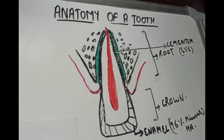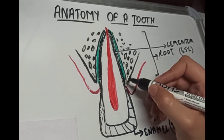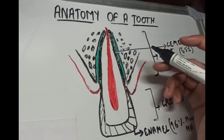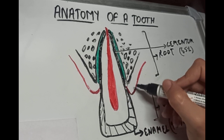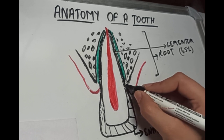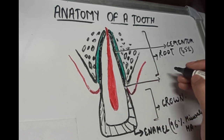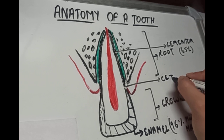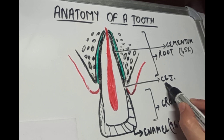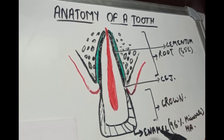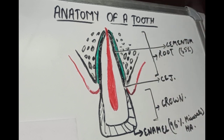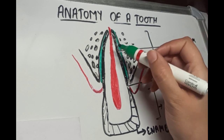The portion of the tooth where the crown and the root meet — the crown is covered with enamel and the root is covered with cementum — is called the cemento-enamel junction. This junction is also called the cervical line. Anything above this cemento-enamel junction is called the anatomical crown, and below the CEJ is called the anatomical root.